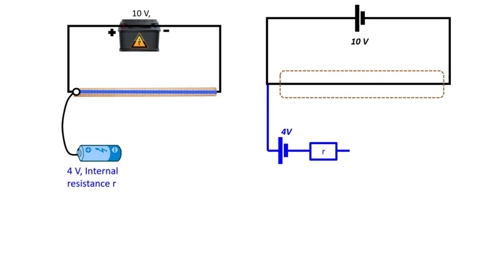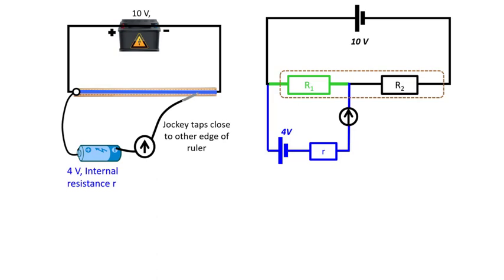Now let's see if you understood. Repeat the analysis for the case when the jockey is tapped close to the other edge of the wire. Deduce the direction of currents in all branches and explain why the potentiometer is not functioning as a voltmeter. Pause the video now, then play again to check your analysis.